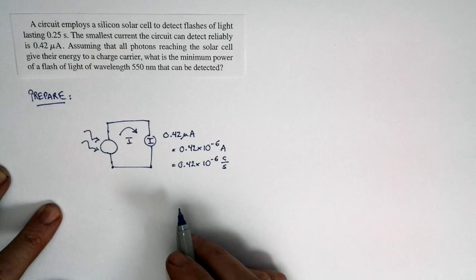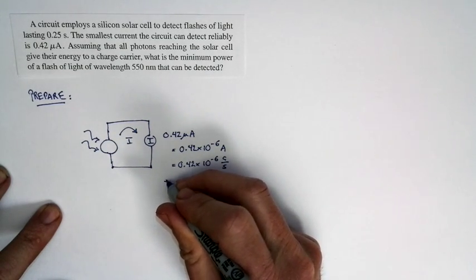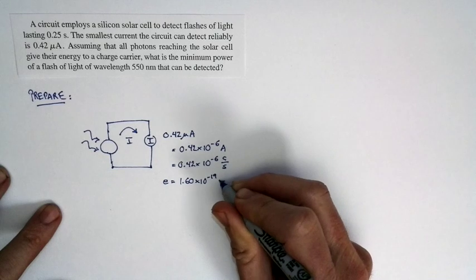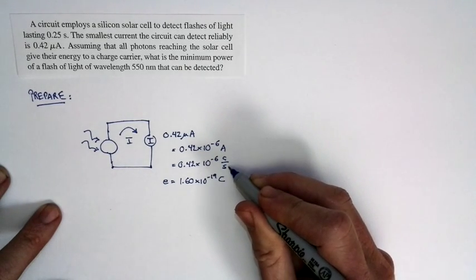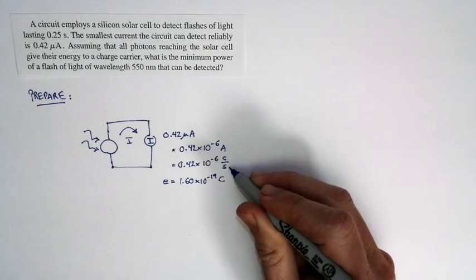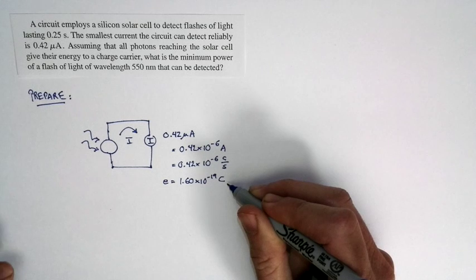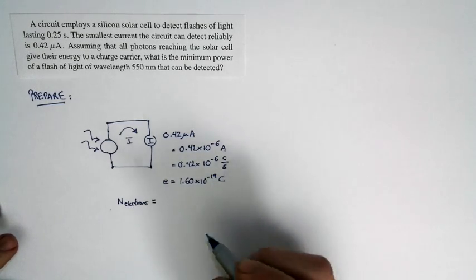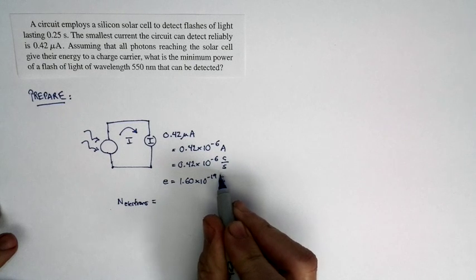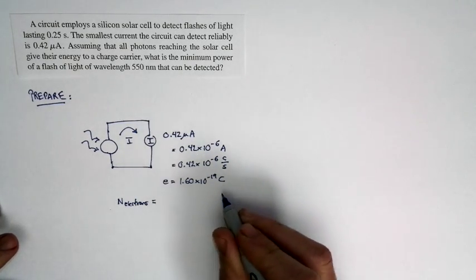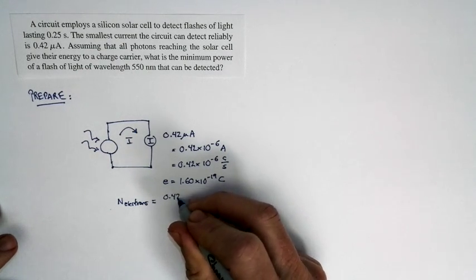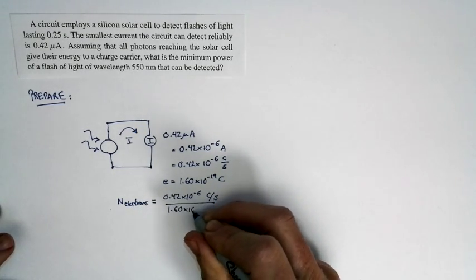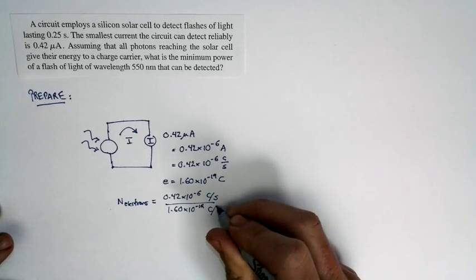The current is carried by charge carriers — in this case, electrons. Each electron carries a charge of 1.6 times 10 to the negative 19 coulombs. The current is a measure of charge per second, and the charge is carried by these charge carriers, so we can work out the number of electrons. The number of electrons equals the current — coulombs per second — divided by the charge on the individual electron. That's 0.42 times 10 to the negative 6 coulombs per second divided by 1.6 times 10 to the negative 19 coulombs per electron.